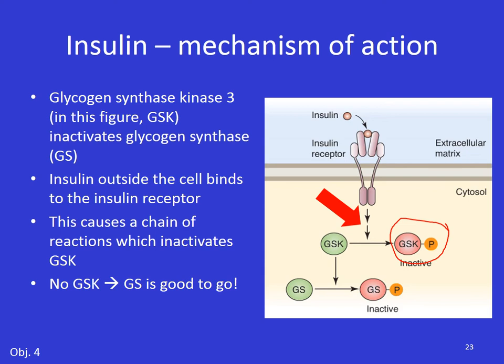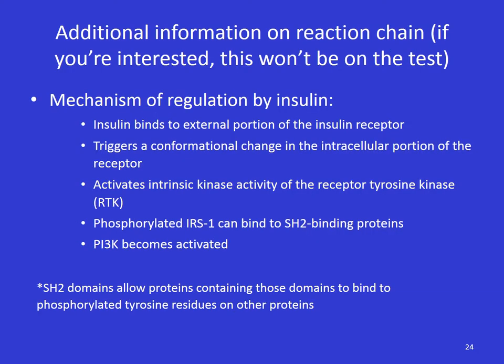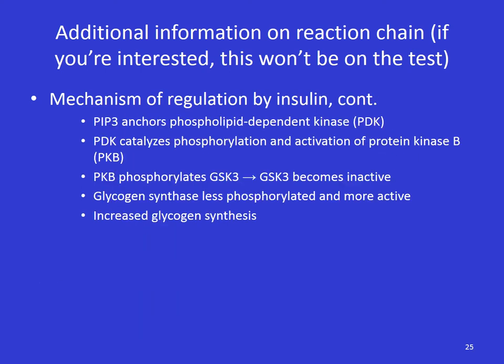If you eat something and have a lot of glucose, your body needs to store that as glycogen. Insulin shows up and tells GSK to get out of the way, stop interfering with glycogen synthase, and allows glycogen to build up. This signaling cascade is pretty interesting but also pretty long — it won't be on the test. You can read these two slides or your book if you wish. A lot of things in biology happen through these long convoluted signaling cascades.